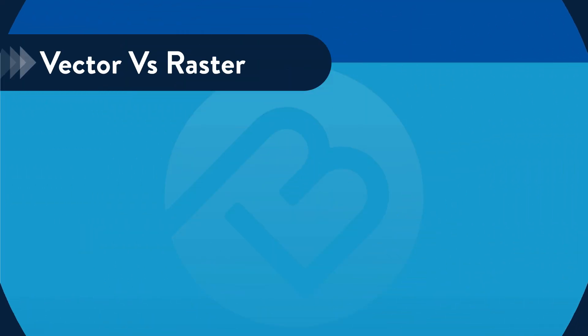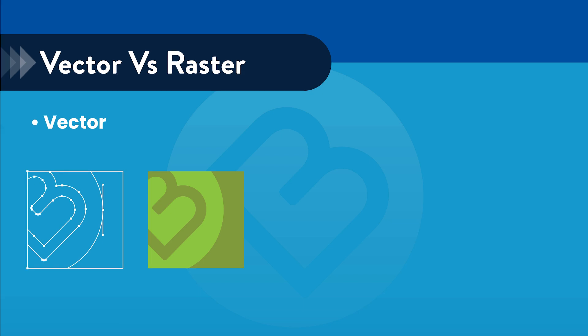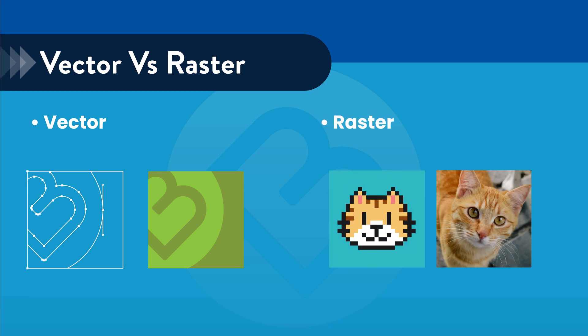Hi there! Today we're going to learn about two important types of images used in graphic design, vector images and raster images. Understanding the difference between these two is crucial for working with promotional products. So let's dive in.